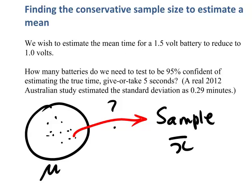This interval is going to look something like the sample mean give or take a certain amount. And if the estimate is a precise estimate, the amount we give or take will be small. How much we give or take is called the margin of error.